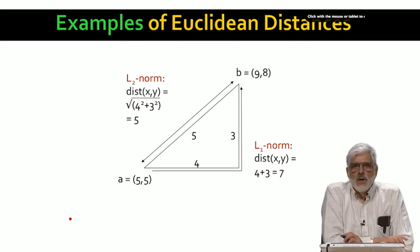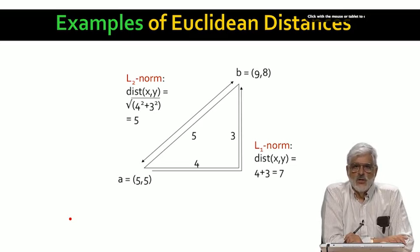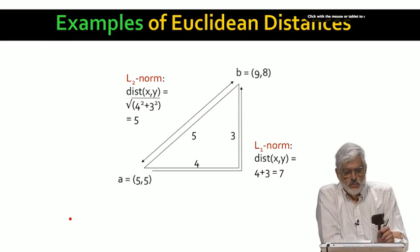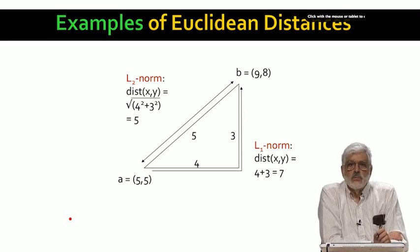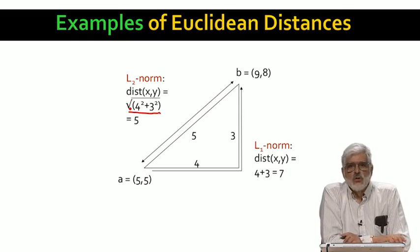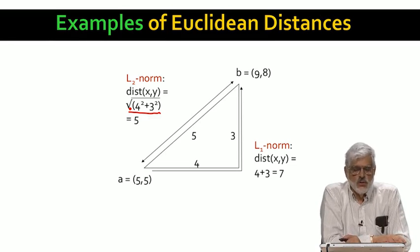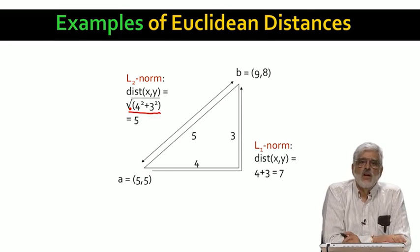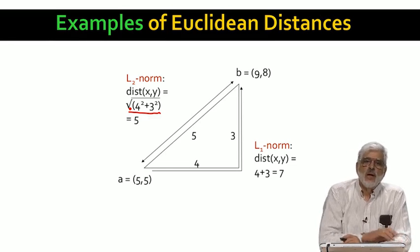On the other hand, the L2 norm is computed as follows: we take the distances 4 and 3 in each dimension, square them and sum them, and finally take the square root. Since 4 squared is 16, 3 squared is 9, the sum is 25, and the square root of that is 5.